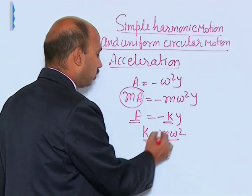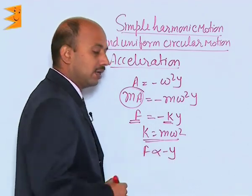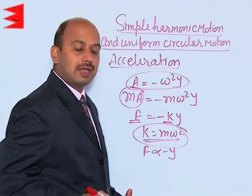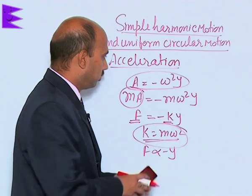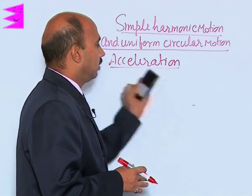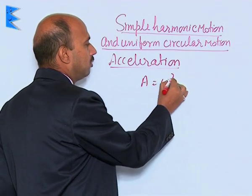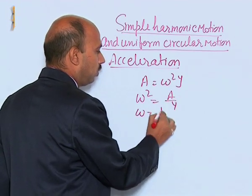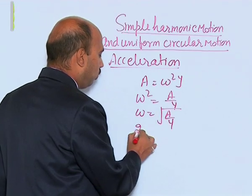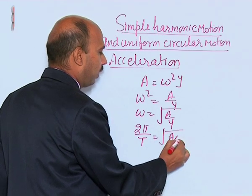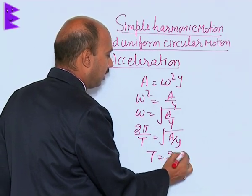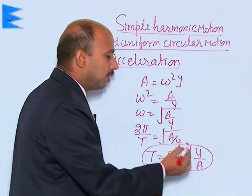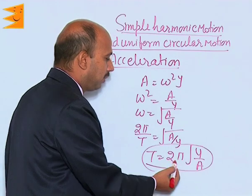For simple harmonic motion, F is directly proportional to the negative of Y. By taking this equation we can get the expression for the time period of a body having simple harmonic motion. If we take A is equal to omega square Y, then omega square is equal to A upon Y, and omega is equal to under root of A upon Y. So t is equal to 2 pi under root of Y upon A. The time period is represented as 2 pi times the square root of displacement upon acceleration.